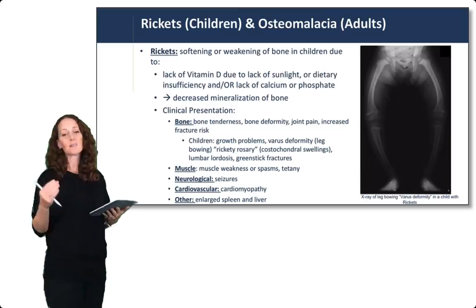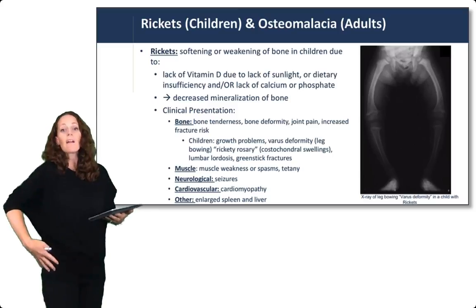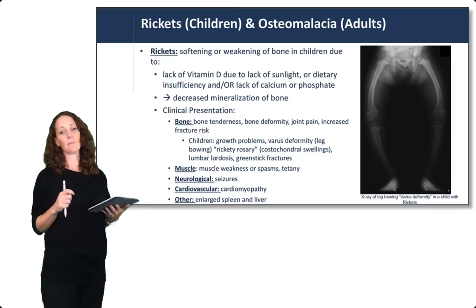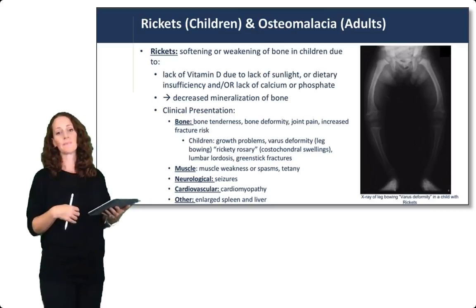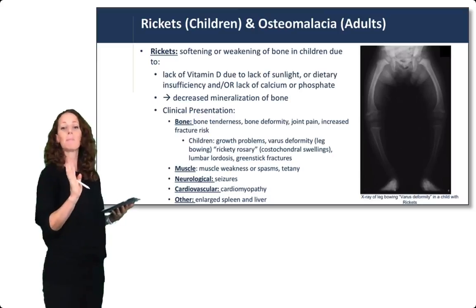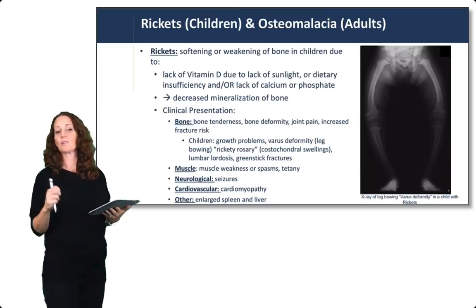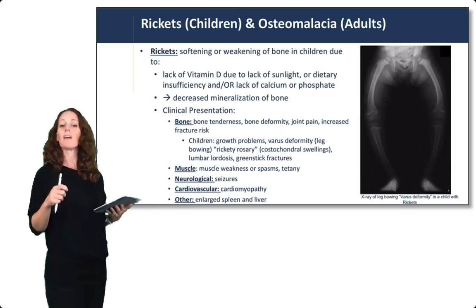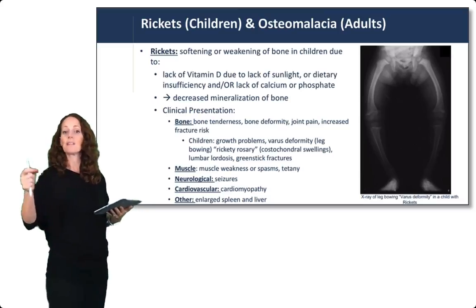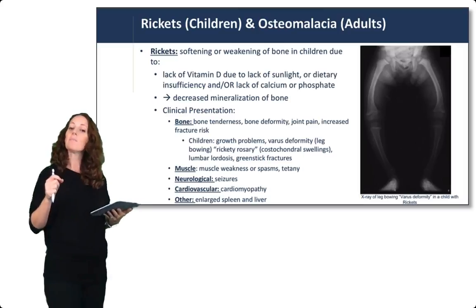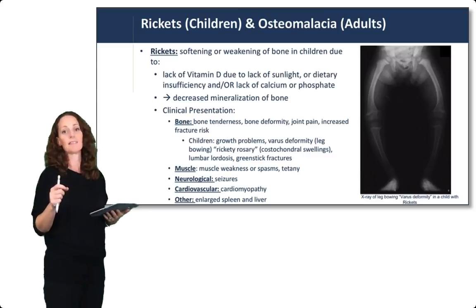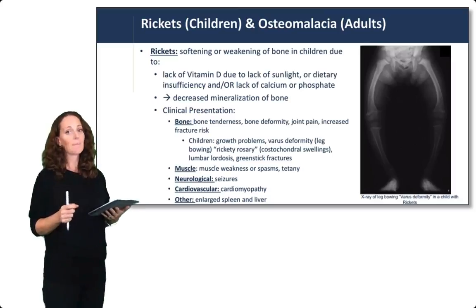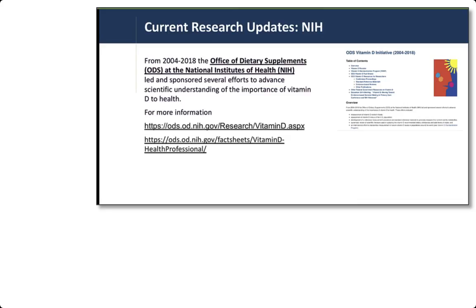In children, rickets can lead to growth problems, a varus deformity which is a bowing of the legs, cartilage deformities specifically costochondral swellings referred to as the rickety rosary, lumbar lordosis or a swayback appearance, and green stick fractures — particular fractures seen in children whose bones have not yet fully developed. There can also be muscular, neurologic, cardiovascular, and other consequences of rickets and osteomalacia.